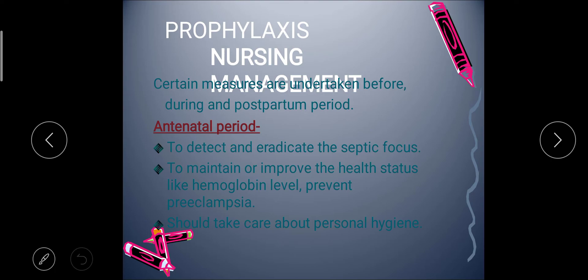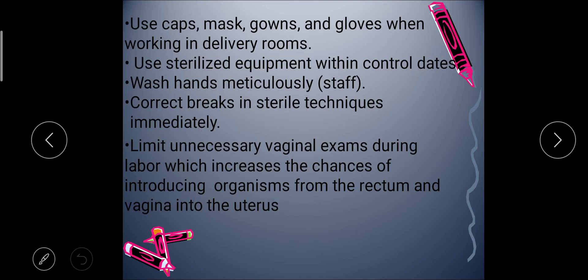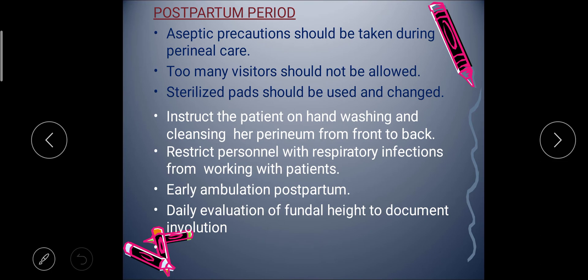We should take care of the patient's personal hygiene and teach them during the antenatal period. During the intrapartum period, the delivery should be conducted with full surgical asepsis — we must maintain full aseptic procedure. The patient is instructed not to touch the vulva during labor. Excessive blood loss should be replaced promptly and prophylactic antibiotics given to prevent infection. Use caps, mask, gown, and gloves when working in delivery rooms; use sterilized equipment; wash hands — this is compulsory. Correct any break in sterile technique immediately. Limit unnecessary vaginal examinations during labor, which increases the chance of introducing organisms from the rectum and vagina into the uterus.